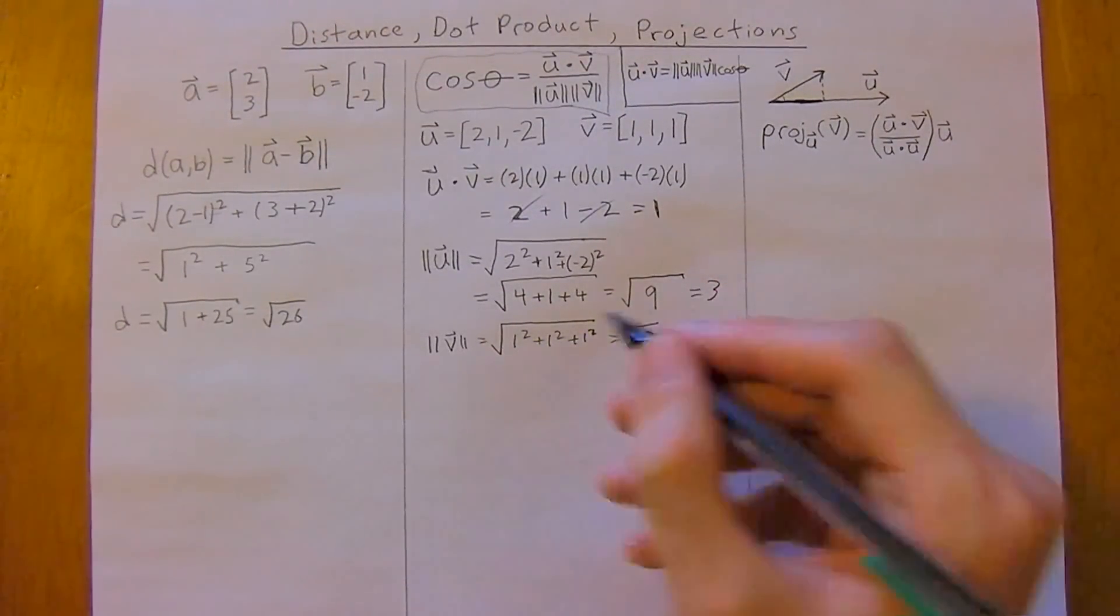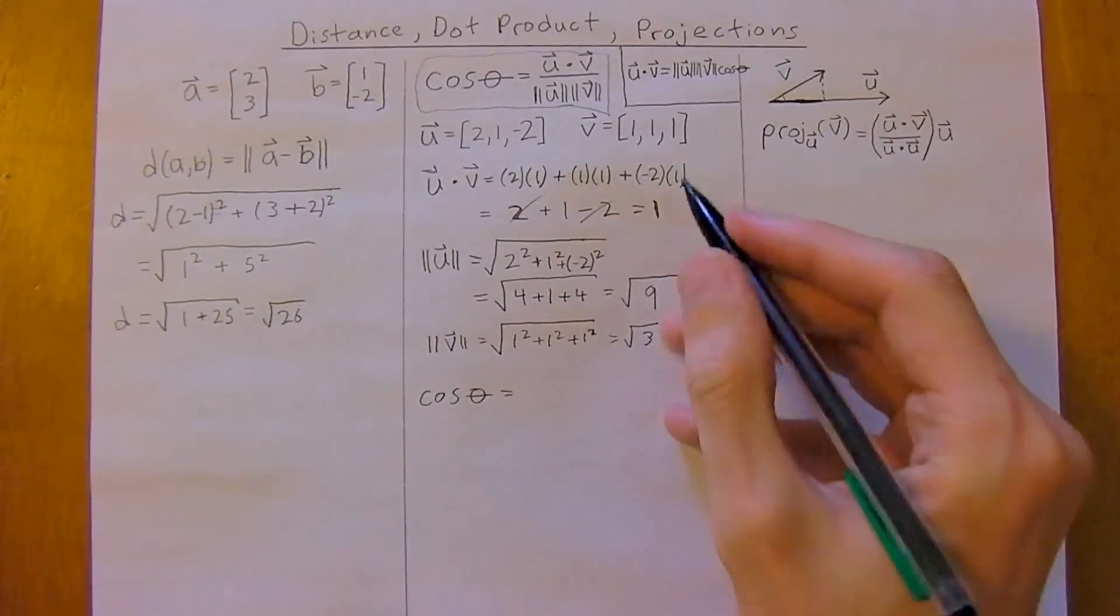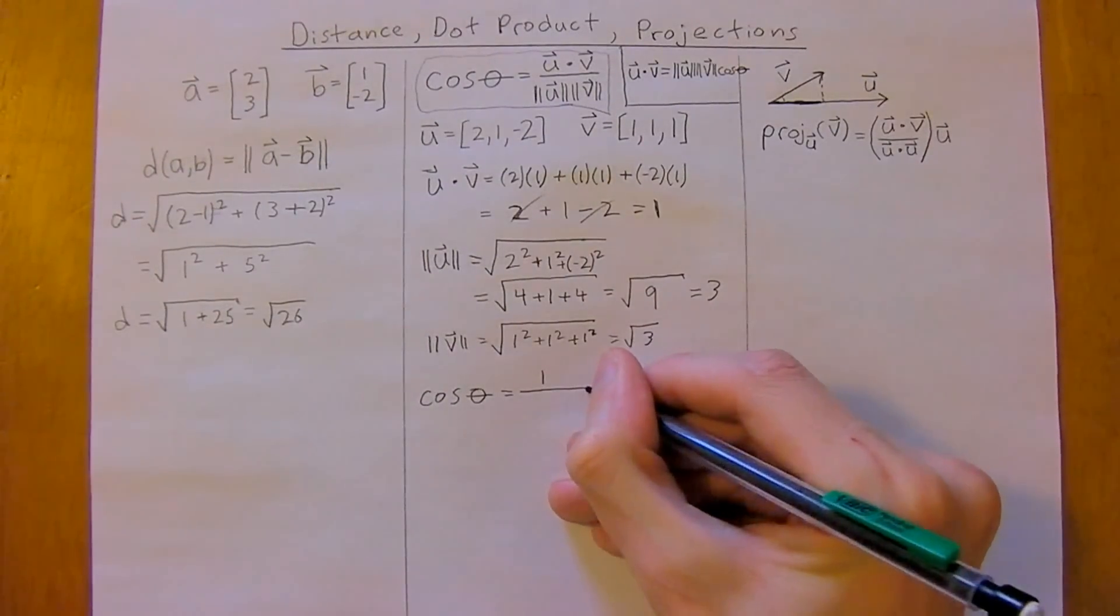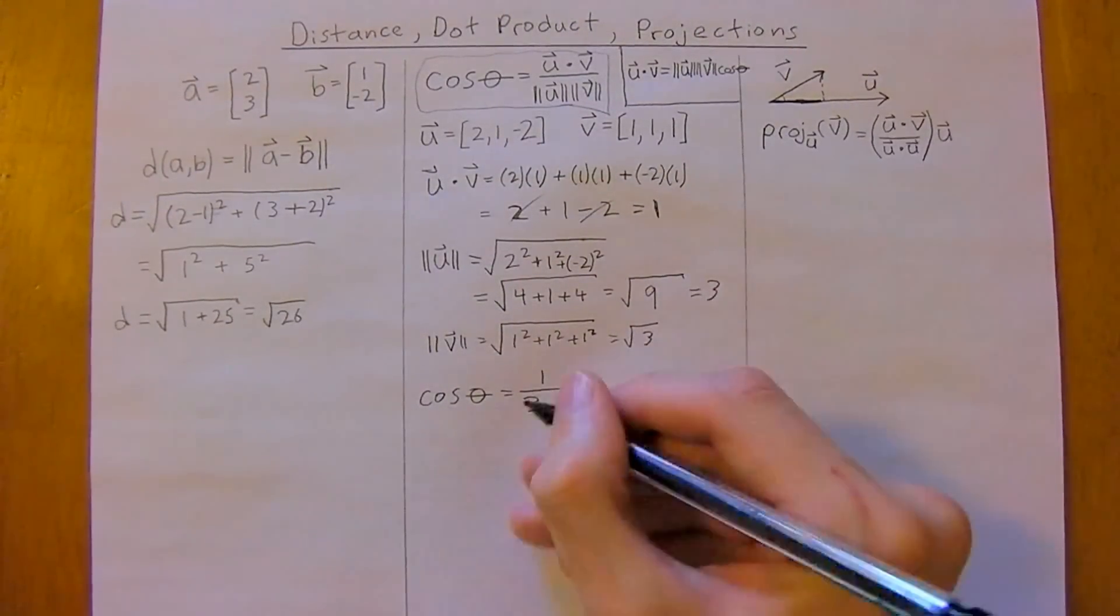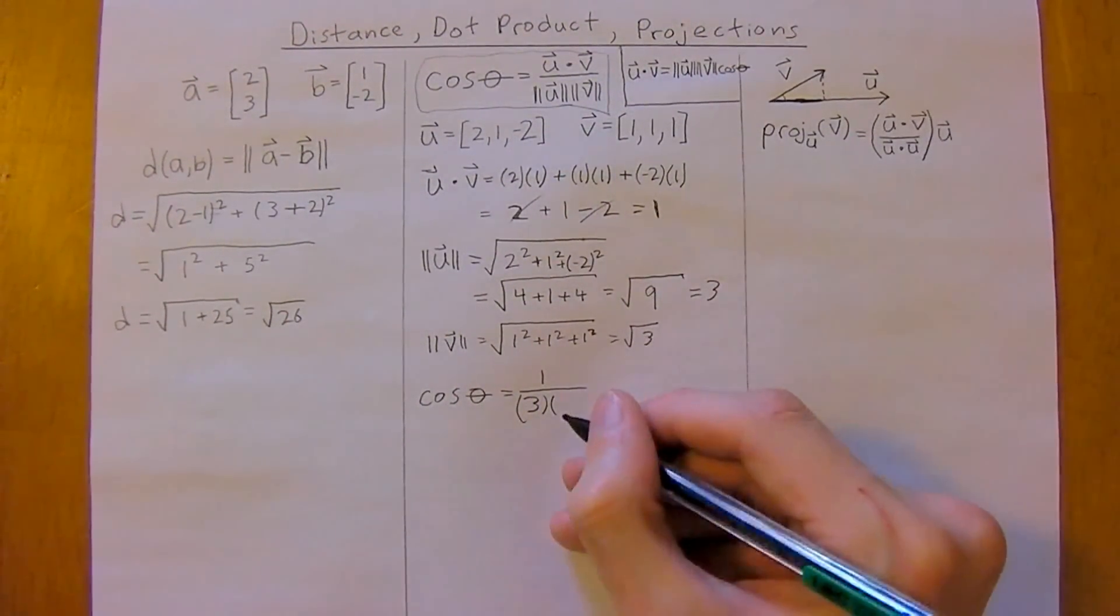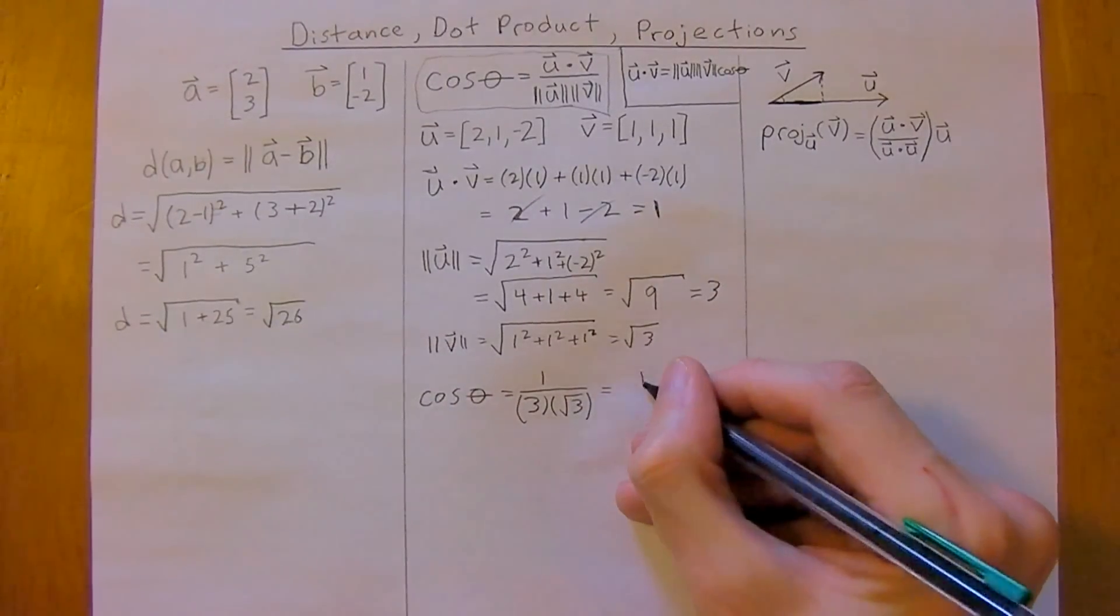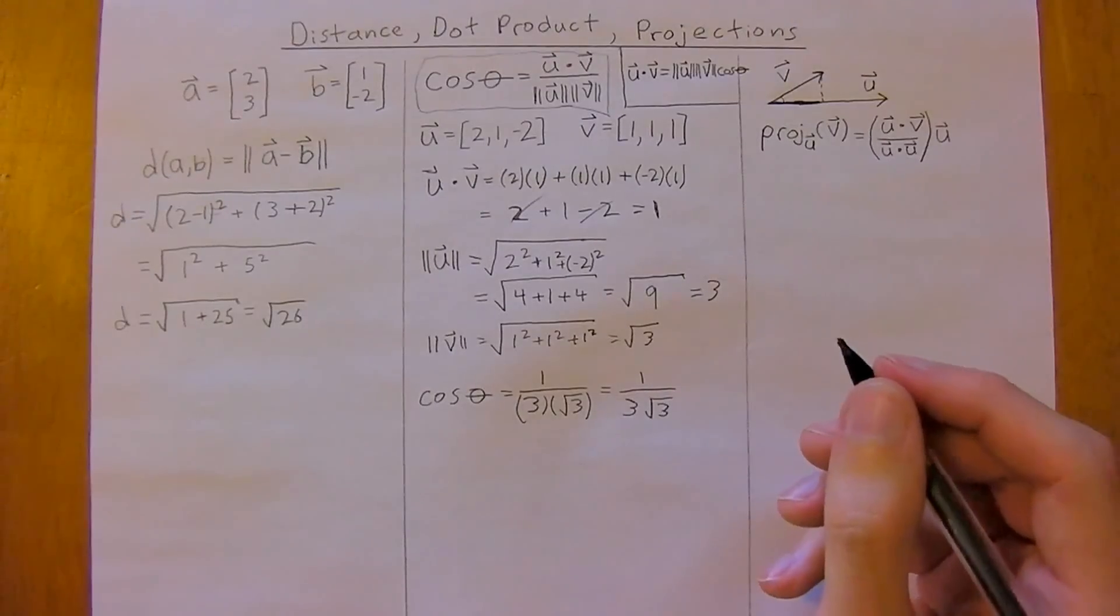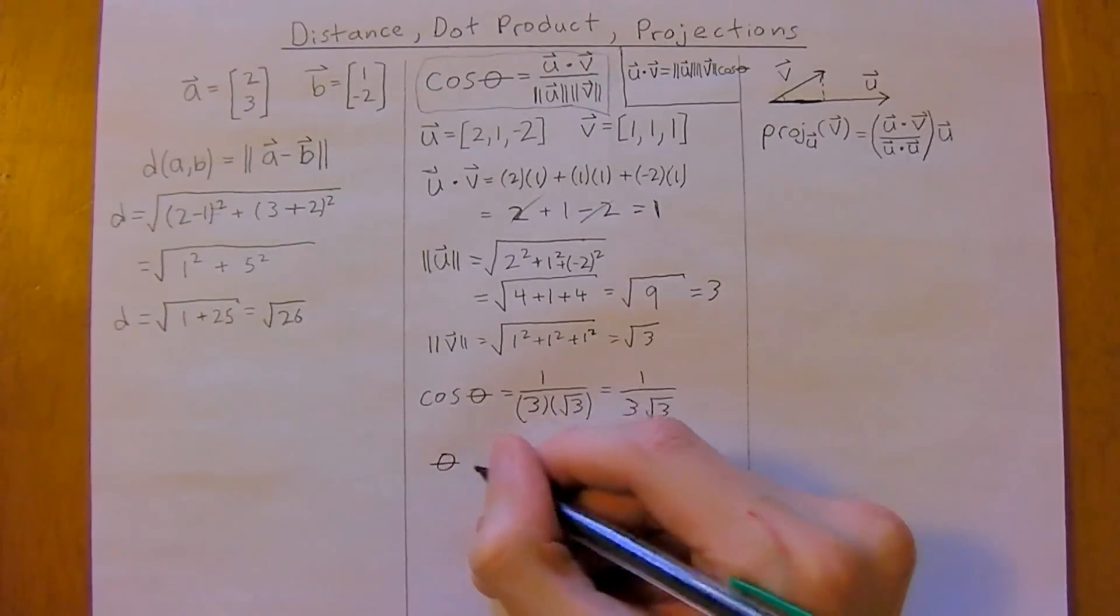So, we get cosine of theta equals, well, we worked out U dot V is just 1 divided by the magnitude of U, which is 3, and the magnitude of V is the square root of 3. So this is just 1 over 3 square root of 3, and now, to get the angle theta, we just do the cosine inverse, both sides of this equation,